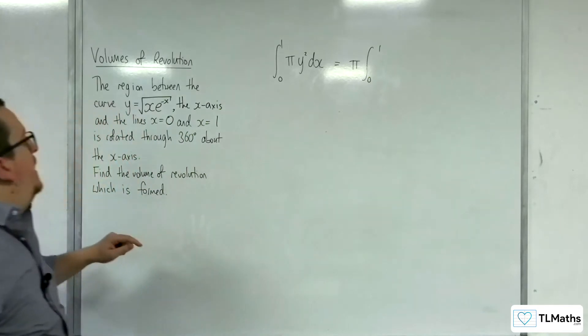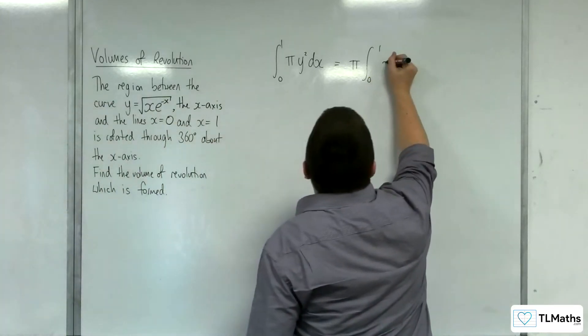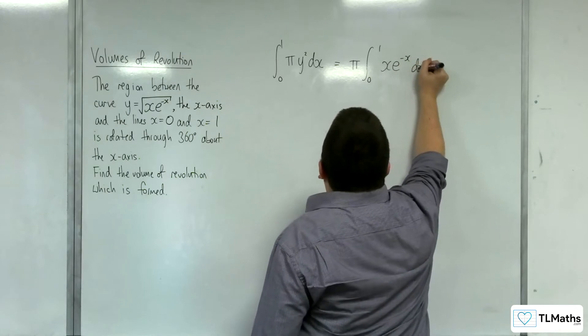And I've got y squared. Now if that's y, y squared will just be x e to the minus x dx.